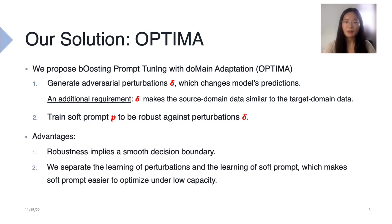The advantages of Optima are two-fold. First, under robust training, it produces a soft prompt that encourages a smooth decision boundary. Second, the low capacity of soft prompt makes it difficult to optimize for both domain discrimination loss and task classification loss. Therefore, we let the perturbations optimize for domain invariance and the soft prompt optimize for task classification loss. This training strategy can improve training stability.